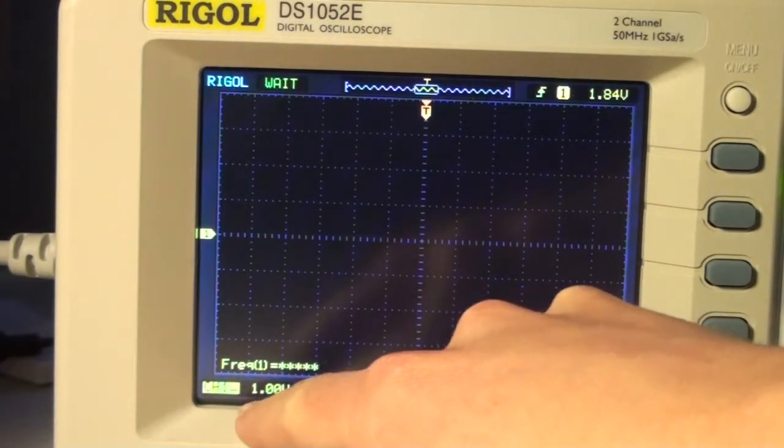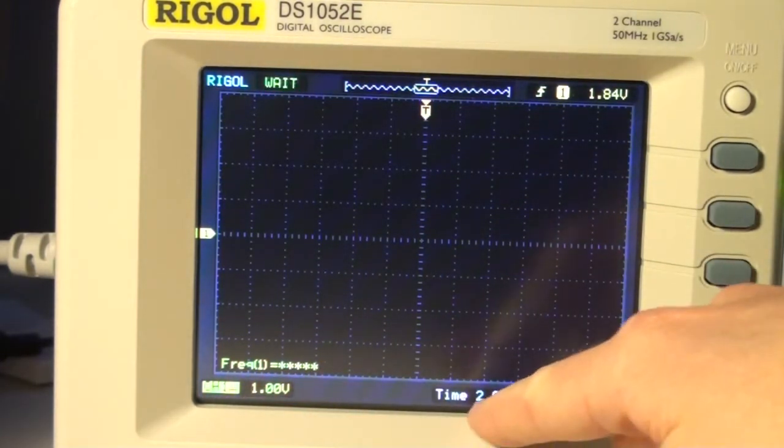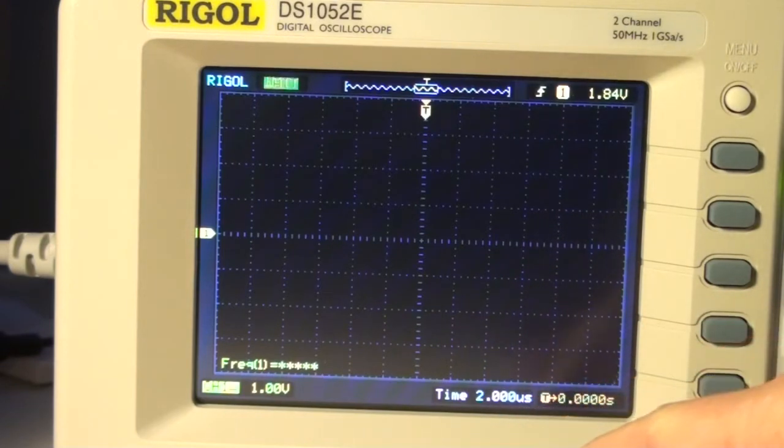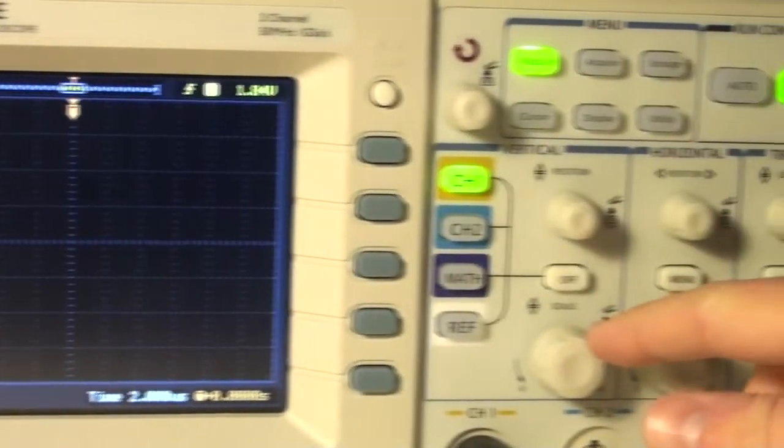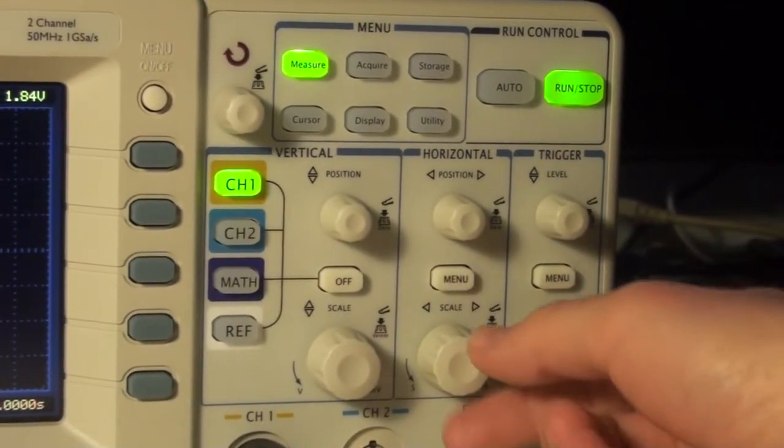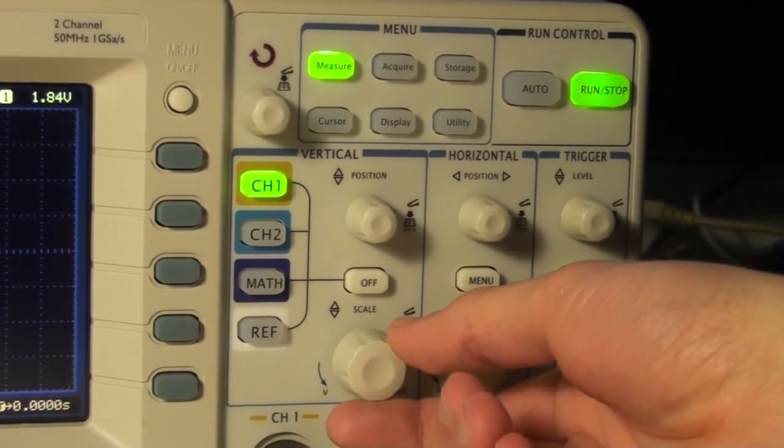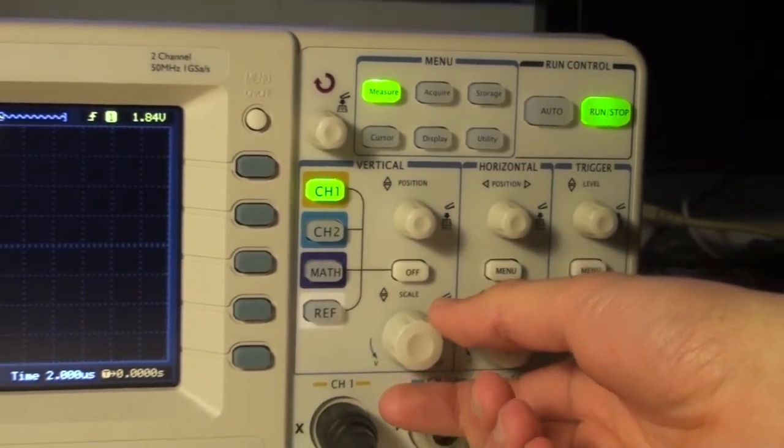In the bottom corner, we see that channel 1 is selected. We are currently measuring on channel 1, we can see the time base which I can adjust using the scale button here and here. This is for the time base, and this is for the voltage base.